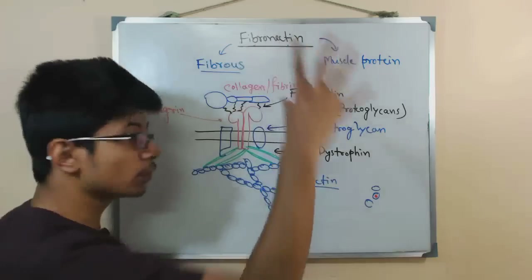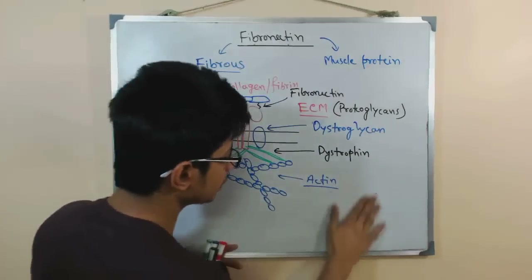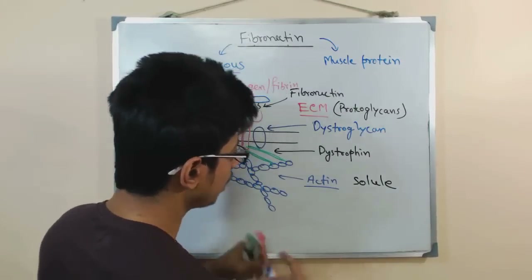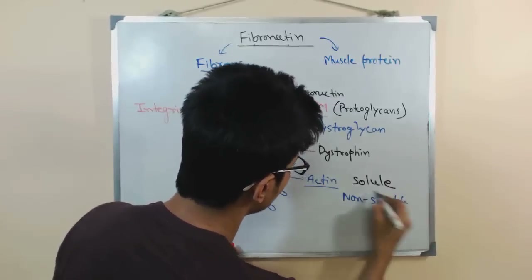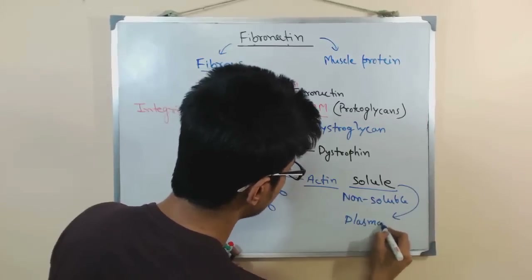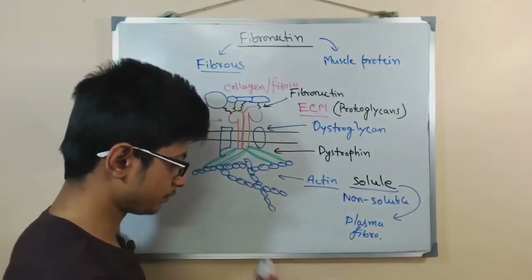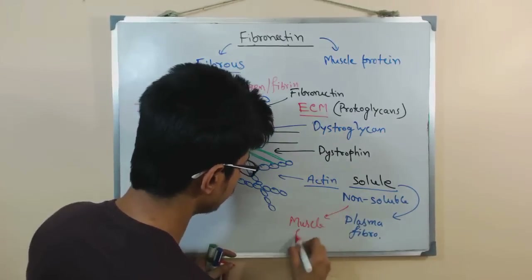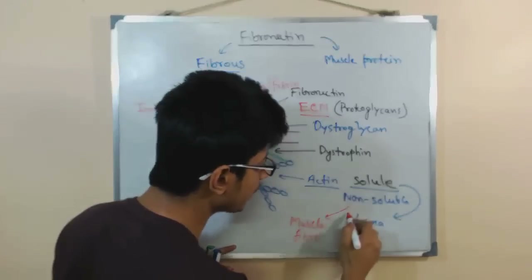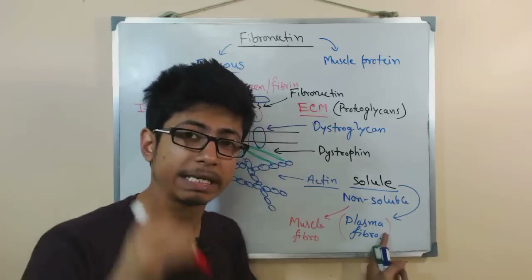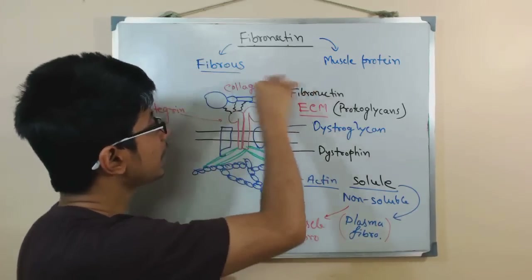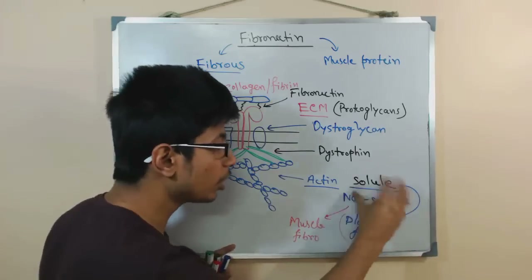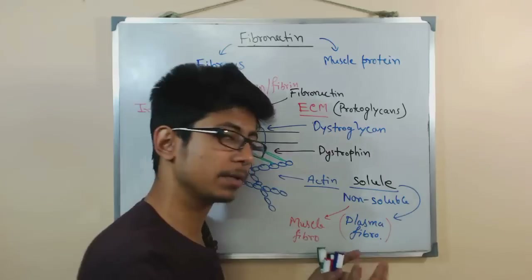Fibronectin has two types: soluble and non-soluble. The soluble form is called plasma fibronectin, and the non-soluble form is called muscle fibronectin. Plasma fibronectin interacts with fibrin present in the extracellular matrix and plays a vital role in blood clotting, making the soluble form important for plasma-related functions.